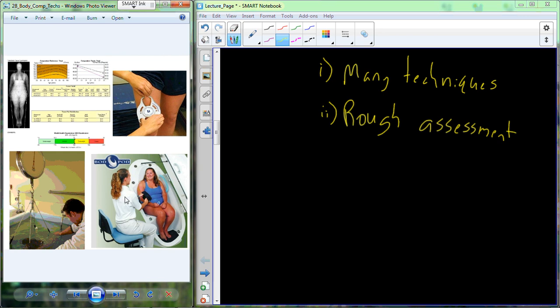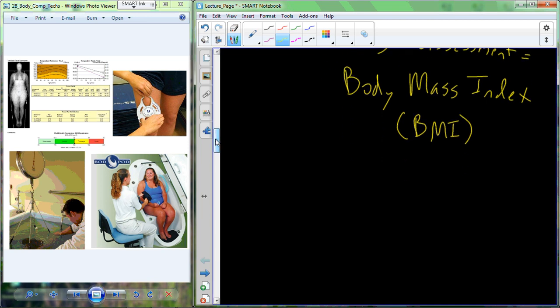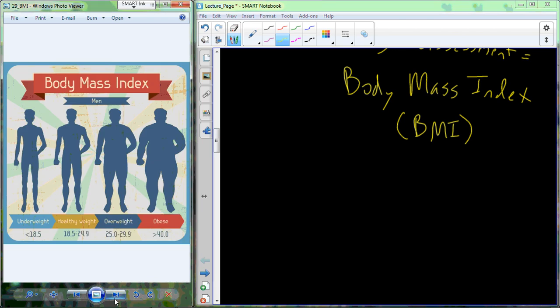So we can use rough assessment tools that don't require expensive or hard to use equipment that requires a well-trained technician. One of the most common rough assessments that can be used is a statistic called body mass index, or just simply BMI. And you probably have calculated your BMI. We'll go through that very quickly. Here's an example of BMI. And you can see that we get a number. And then that number is going to correlate with whether you're underweight, healthy weight, overweight, or obese. And you can see that there are changes that occur in the individual and what their shadow or their silhouette would look like.